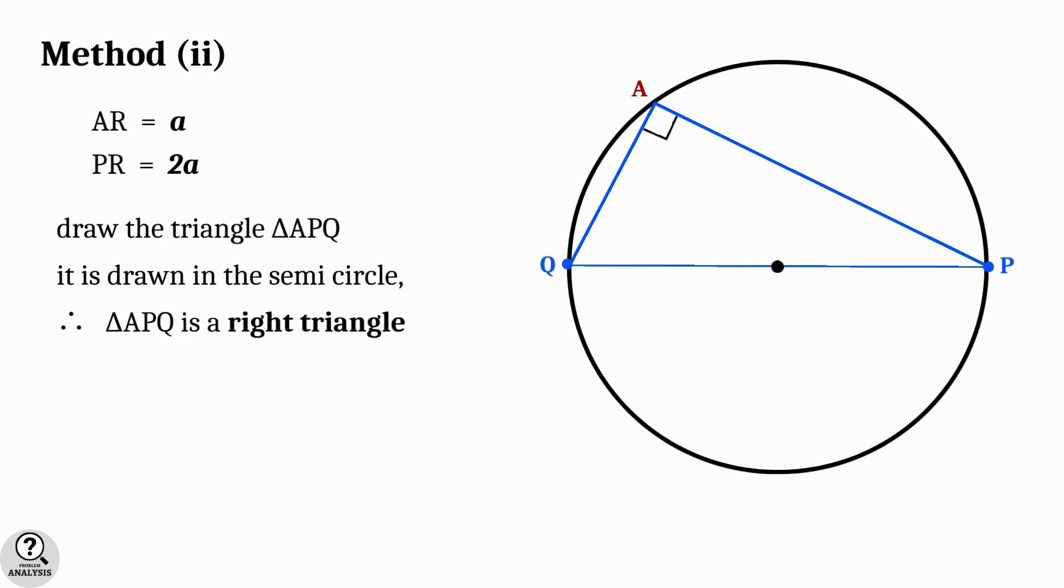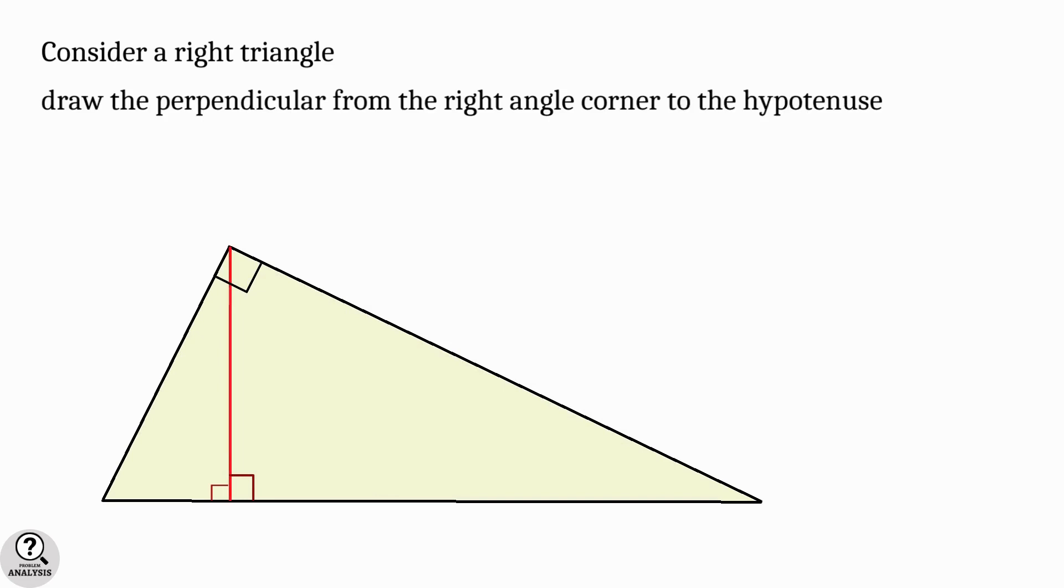Now draw the triangle APQ. As you can see, it is drawn in the semicircle, and so the triangle APQ is a right triangle. Now we have to note an important property of similar right triangles.